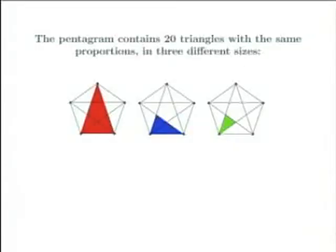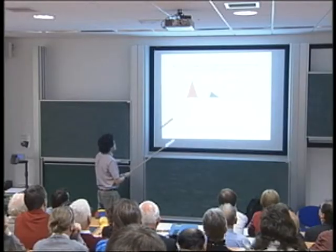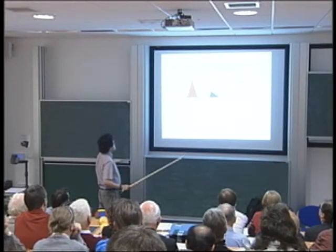And the pentagram is a really interesting illustration of some of the sneaky properties of the number five. So you may have looked at a pentagram a lot of times, but you may never have really looked at it carefully. So here I have a regular pentagon, and then I just draw all these lines going between all the corners to get a five-pointed star. But if you look carefully, you see there are lots of triangles in there. And in fact, there are 20 triangles that all have the same proportions, all the same shape.